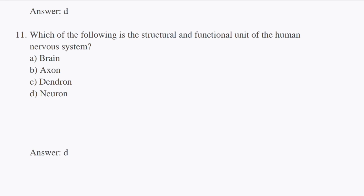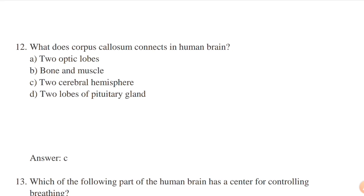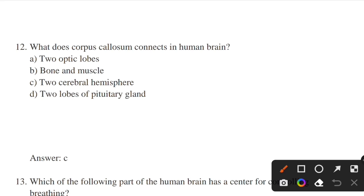What does the corpus callosum connect in the human brain? Options: two optic lobes, bone and muscle, two cerebral hemispheres, two lobes of pituitary gland. Answer: option C — two cerebral hemispheres. Corpus callosum is a part of the brain that allows communication between the two hemispheres. It is responsible for transmitting neural messages between the right and left hemisphere.